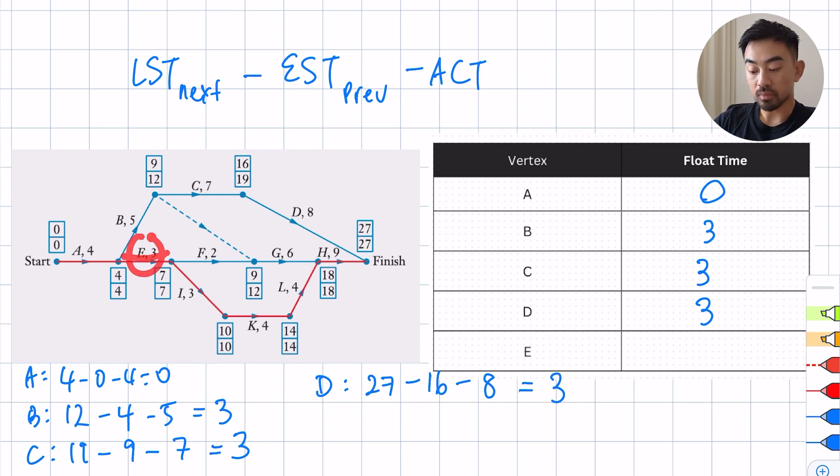Now let's do one more which is E. E you can see is here. Now because it's already on the critical path you should know that it's going to be equal to 0, but let's just make sure. So E will be 7, the bottom box of the next, minus 4 of the earliest which is there, and then also minus 3 which is the activity. So 7 minus 4 minus 3 is 0 and we are done.